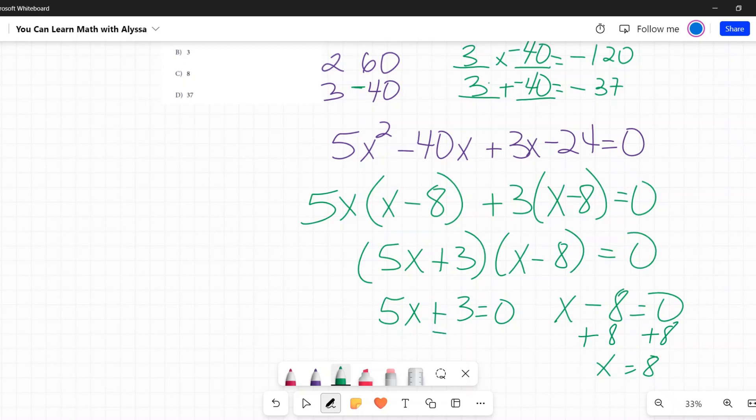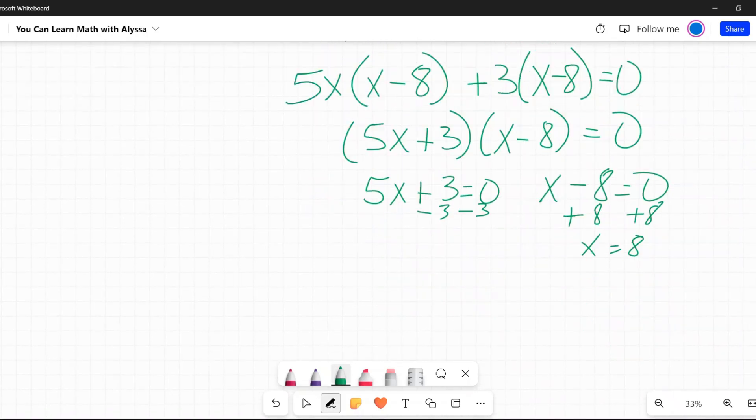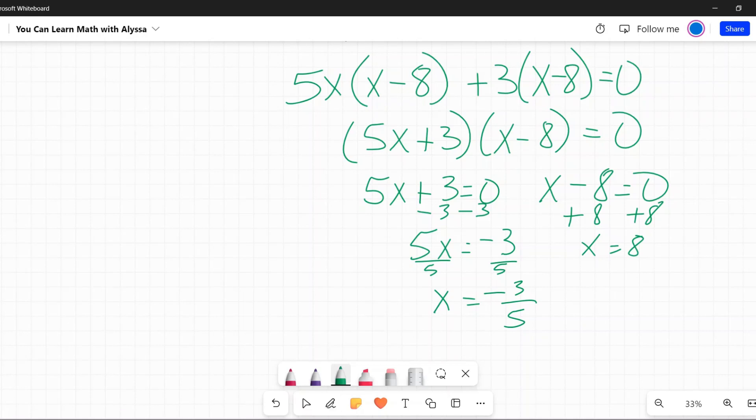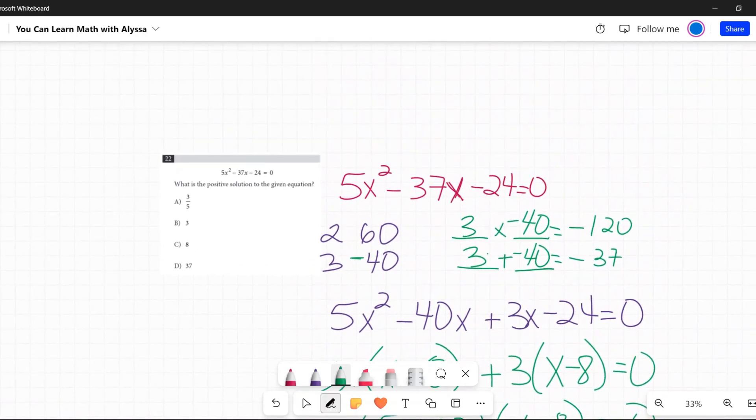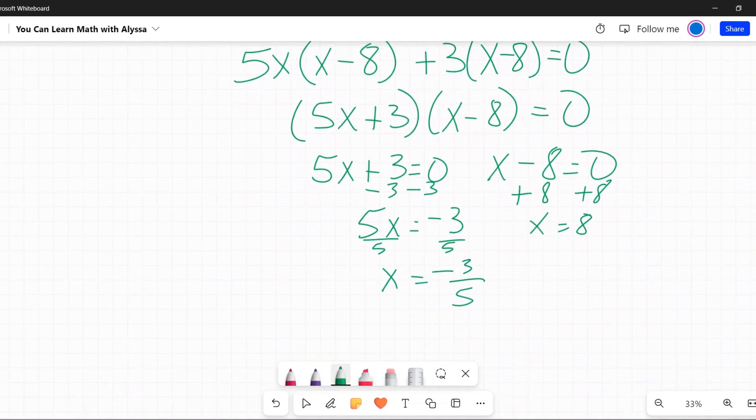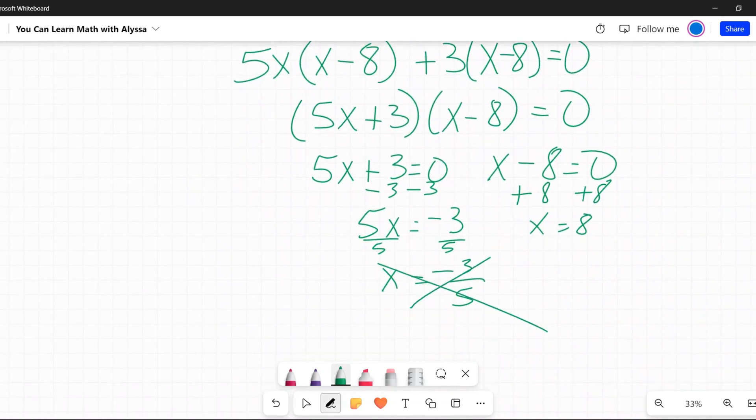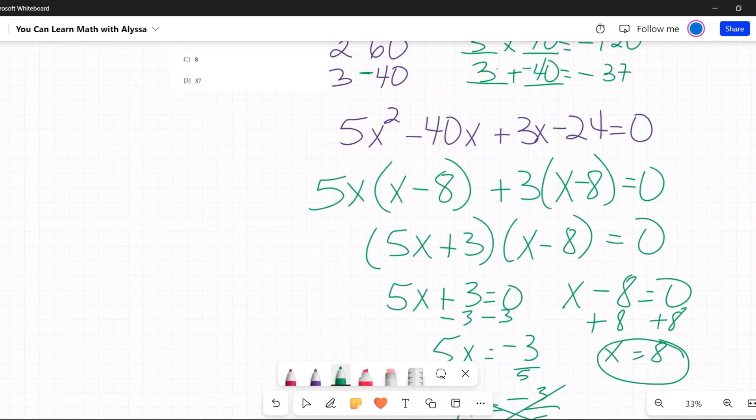But if you want to see this one, I would subtract 3 from both sides. This just keeps going. I keep moving up. And I would get 5x equals negative 3 and then divide both sides by 5, x equals negative 3 fifths. And if you recall, they asked for the positive solution to the given equation. So this negative one, we don't need it. We only need this positive one.